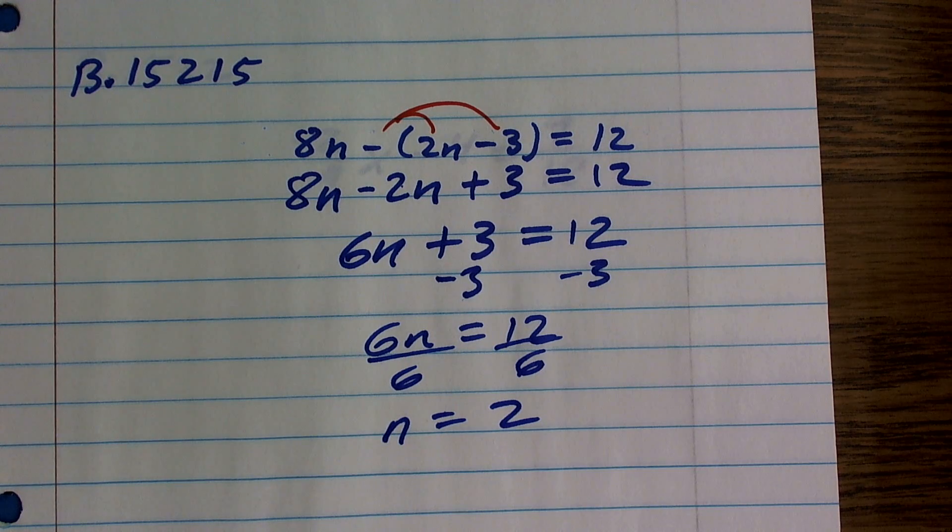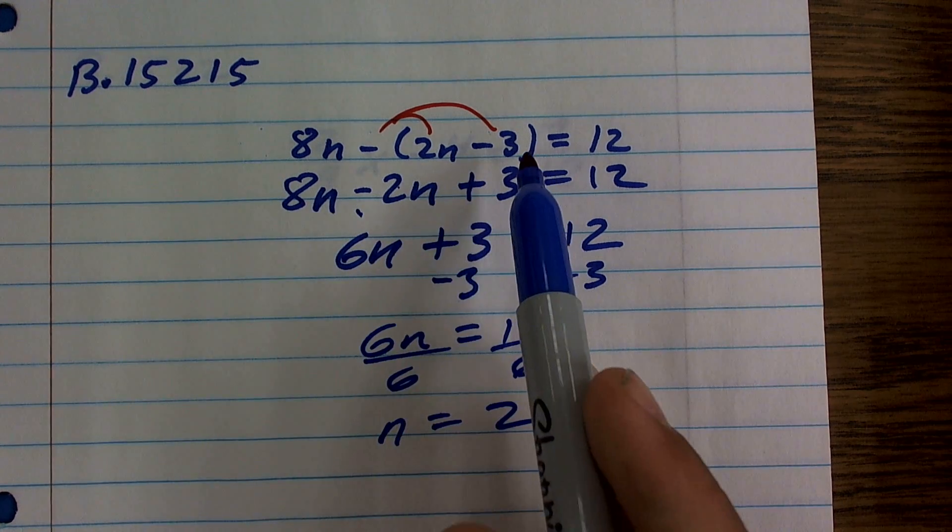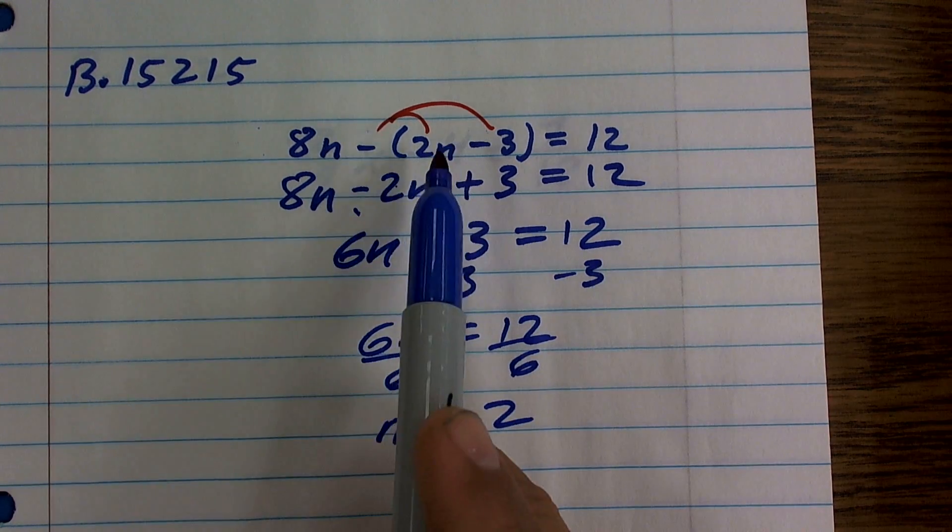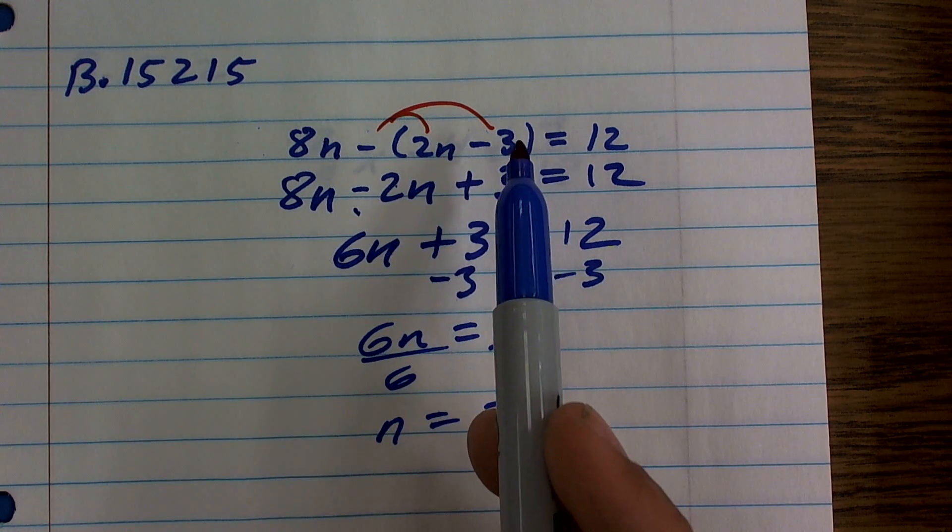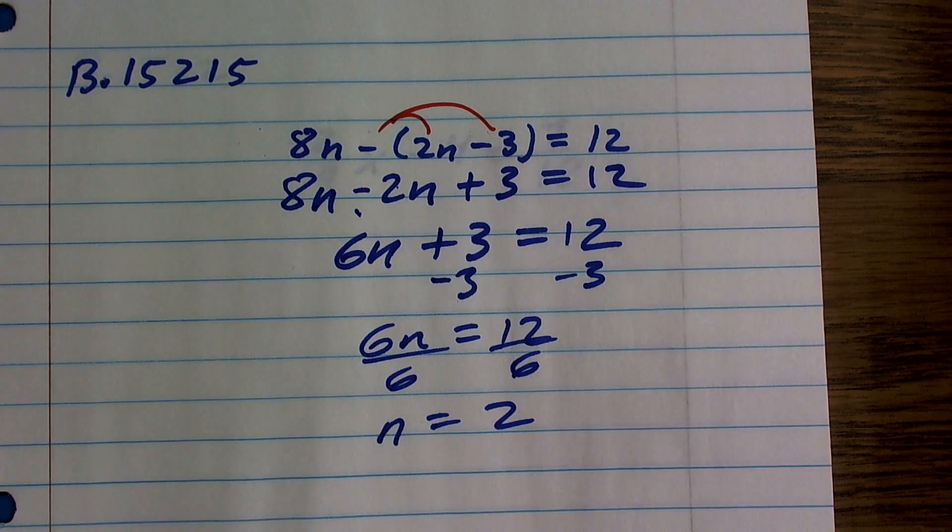So that means when the value of n is 2, this equation is true. You can plug in 2 for n to verify your solution to make sure it makes it true.